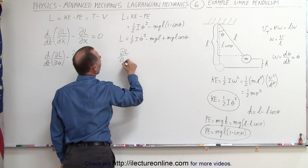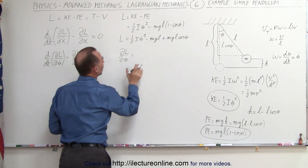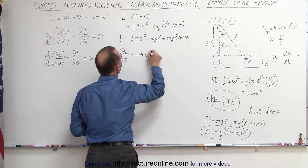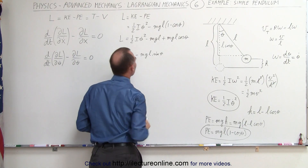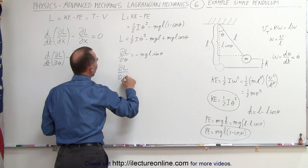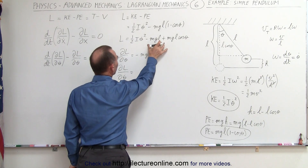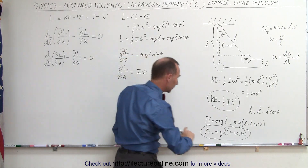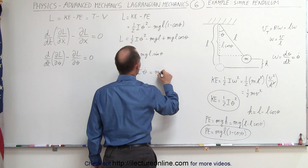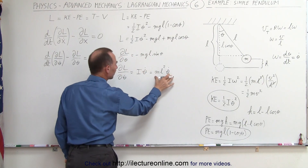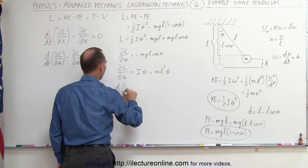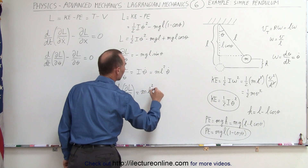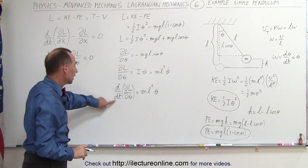Taking the partial of the Lagrangian with respect to theta: the first two terms go to zero, and the derivative of cosine is negative sine, giving minus MGL sine theta. Taking the partial with respect to theta dot: the constant terms go to zero, leaving I times theta dot, which equals ML squared theta dot. Then taking the time derivative of that gives ML squared times theta double dot.